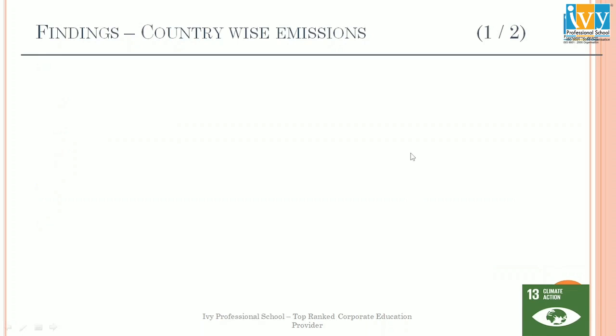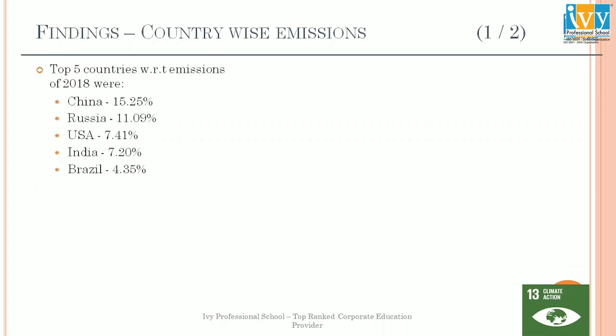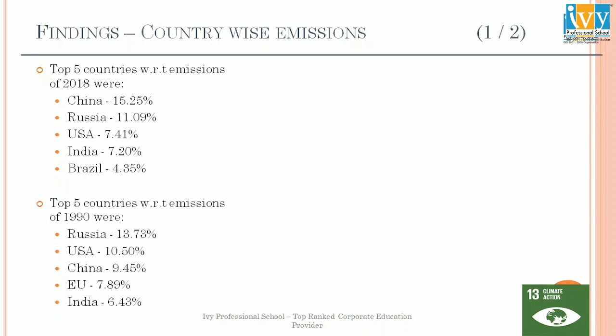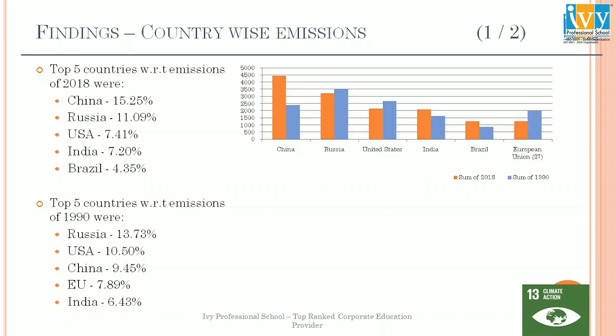Now we will move on to country-wise emissions. The top 5 countries with respect to 2018 are China, Russia, USA, India, and Brazil. For 1990, the data is somewhat different — Russia was topping and India was fifth. We can see that EU and Brazil switched positions but not by much. That is why in this chart I have kept all 6 countries to represent the data in a better way.